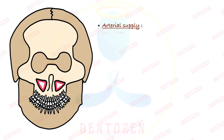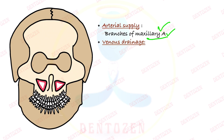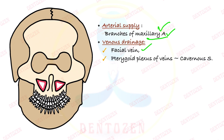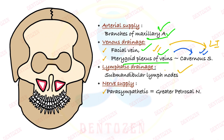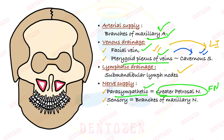Regarding blood supply, it is via branches of the maxillary artery. Venous drainage is into two: the facial vein and the pterygoid plexus of veins, which importantly has communications with the cavernous sinus through an emissary vein — so any infections of the maxillary sinus can go to the cavernous sinus and be life-threatening. Lymphatic drainage is into the submandibular lymph nodes. Nerve supply: parasympathetic secretomotor is through the greater petrosal nerve — a branch of the facial nerve — and sensory is through branches of the maxillary nerve.